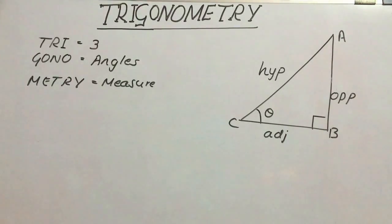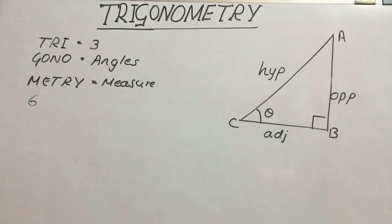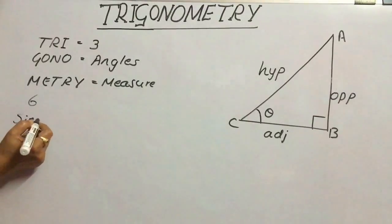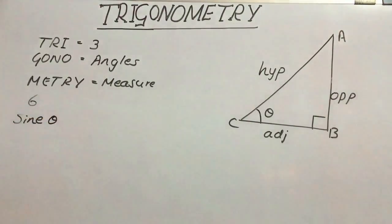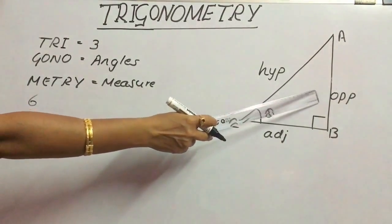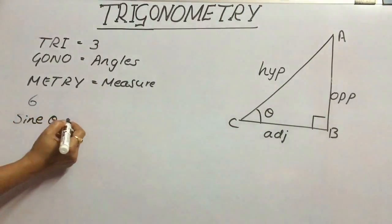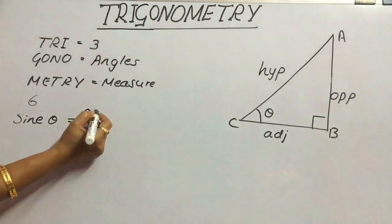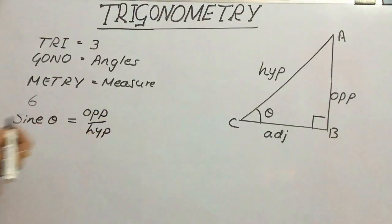Under trigonometry, there are 6 trigonometric ratios. The first one is sine of the angle theta. Sine theta is equal to the ratio of the opposite side divided by the hypotenuse.